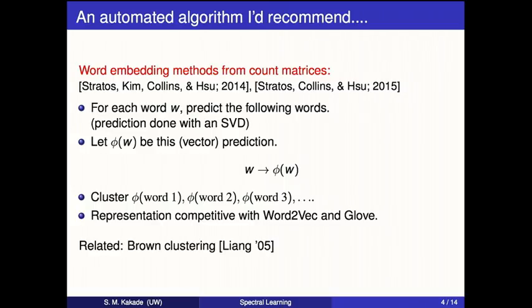Words like red and green, even though the words themselves are different, are going to precede very similar words. So the idea is: step one, take your words and build a prediction of what follows them. Then cluster the mappings of what follows the words — for every word you have a vector of what types of things follow it, then you cluster those vectors. This is a way to get groupings or embeddings of words.